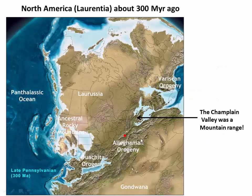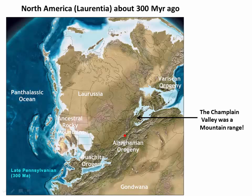Here's what that would have looked like around 300 million years ago: the entire continent of Africa was sutured right up against the entire continent of North America. The northeastern U.S. — Vermont and much of the eastern U.S. — were right at that suture zone, and that's the proto-Appalachian mountains that were formed during that final Alleghenian Orogeny.